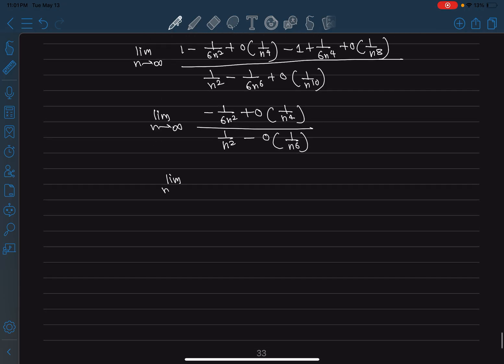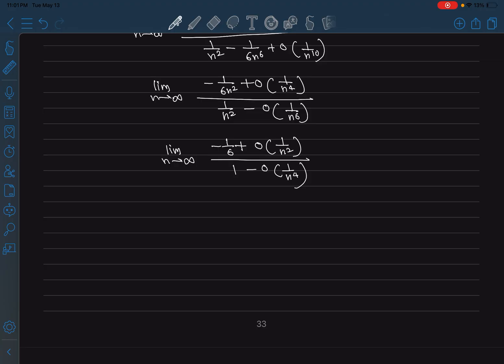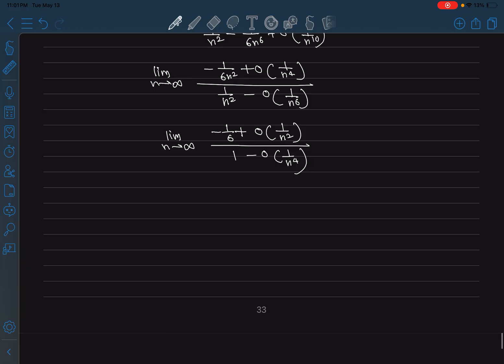So now limit n goes to infinity, if I just multiply numerator and numerator by n square, I have minus 1 by 6 plus order of 1 by n square, and then 1 minus order of 1 by n to the power 4th. Now at infinity, both of these 1 by n square and 1 by n to the power 4, those will just go to 0. So I will have minus 1 by 6 plus 0 by 1 minus 0, and that's just minus 1 by 6, and that's the limit guys.